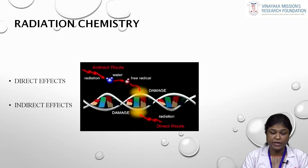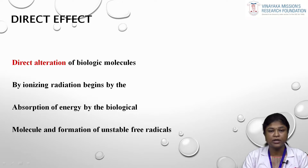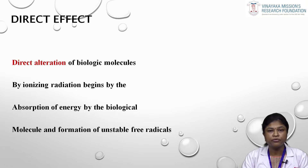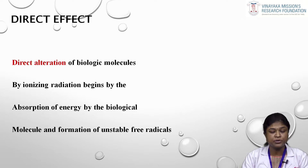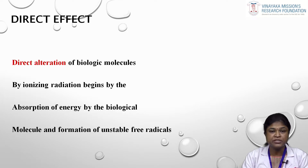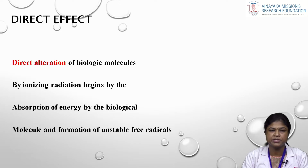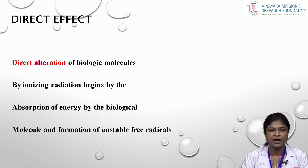Radiation chemistry can be described in terms of direct and indirect effect. In the direct effect, there is a direct alteration of biological molecules by ionizing radiation, which begins by the absorption of energy by the biological molecule and formation of a free radical. These free radicals are unstable. When radiation acts at the cellular level, it brings about changes directly affecting the cells — this is called the direct effect.